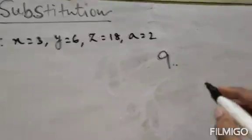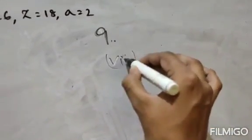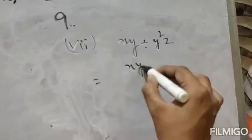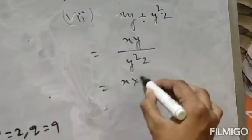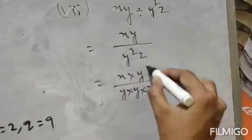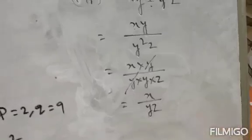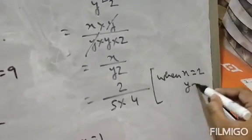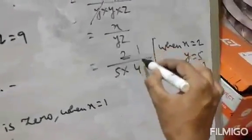Question 9, part 7: the expression is xy divided by y²z. Simplifying: xy/(y²z) = x/(yz). Values: x=2, y=5, z=4. So 2/(5×4) = 2/20 = 1/10. The answer is 1/10.